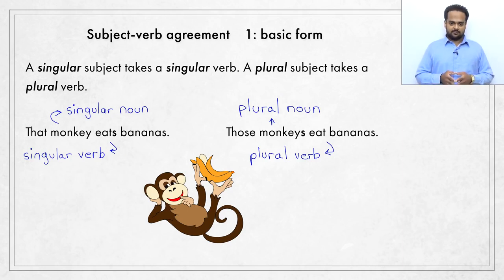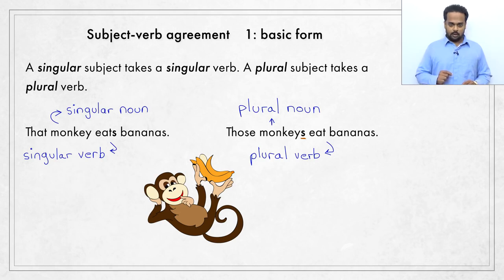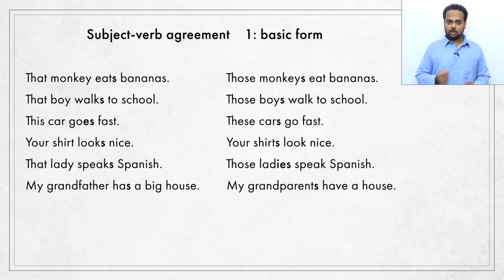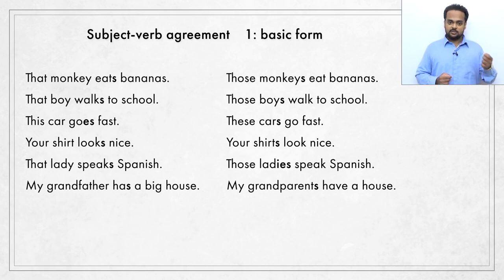Notice that the nouns and the verbs are behaving in opposite ways. The singular noun monkey becomes monkeys with an S in the plural form. But the verb has an S in the singular form — eats — and the plural verb eat does not have an S. Here are some more sentences: 'That boy walks to school,' 'Those boys walk to school,' 'This car goes fast,' 'These cars go fast,' 'Your shirt looks nice,' 'Your shirts look nice.'